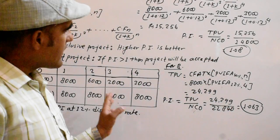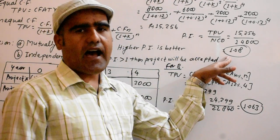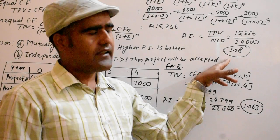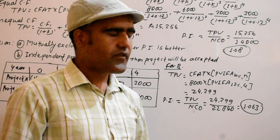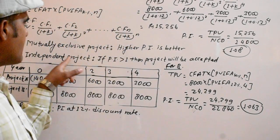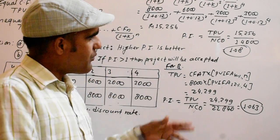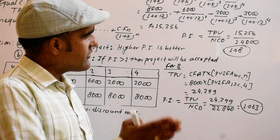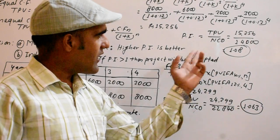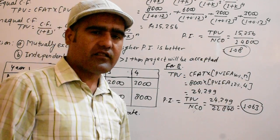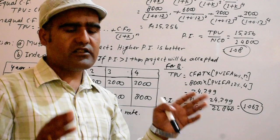If these projects are mutually exclusive, I would prefer Project A because it has a higher Profitability Index of 1.08, which is higher than Project B's 1.063. If these projects are independent, I would accept both projects because their profitability index is higher than 1. If you have two profitability indexes both more than 1, you accept both under independent case.